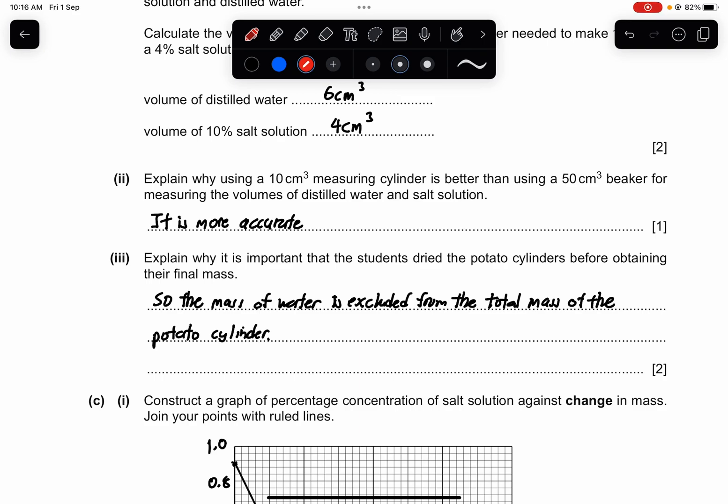Part 3. Explain why it's important that students dry the potato cylinders before obtaining their final mass. It's because the mass of the water is included inside the calculation. So what you do is that you want to remove the water so that it's excluded from the total mass of the potato cylinder when it's being reweighed again.